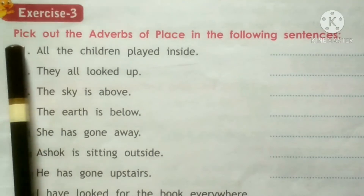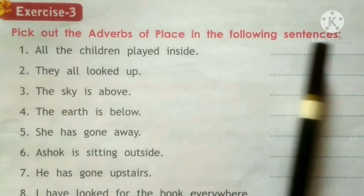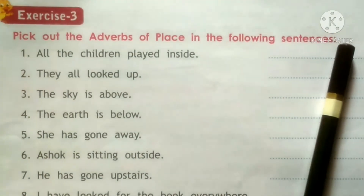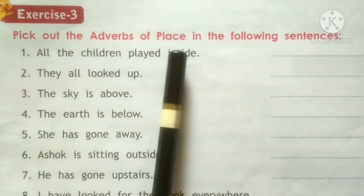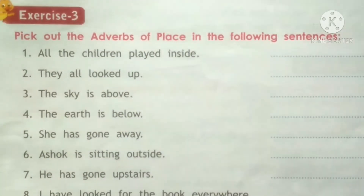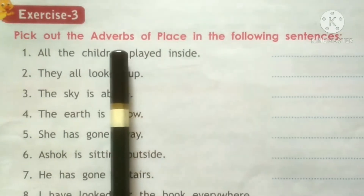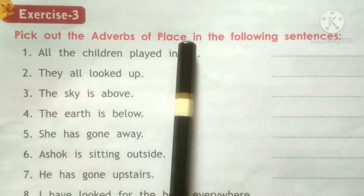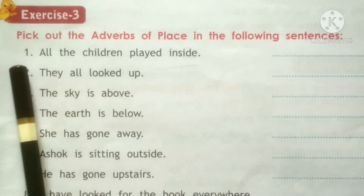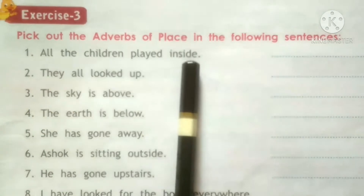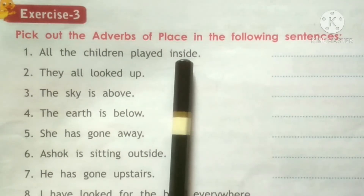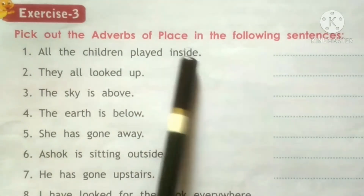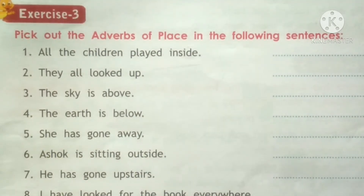Exercise 3: Pick out the adverb of place in the following sentences. We remember adverb of place — place matlab jo sentence mein place dikhata hai, that is adverb of place. First sentence: All the children played inside. They were playing inside — matlab under khil rahe hain. Toh place kaisi hai? Inside.